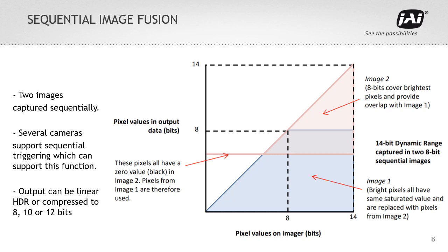For still photographers, this technique is typically used with landscapes or other scenes with little or no movement, so even if it takes a second or two to change the exposure, the two images can be fused without any spatial offset. At first glance, it appears this method is unsuitable for machine vision applications involving rapid movement. However, the development of a sequencing trigger function, along with continuous advances in camera frame rates, has made it possible to use this method in machine vision applications.